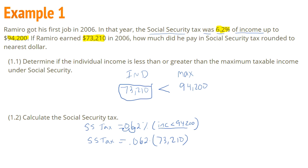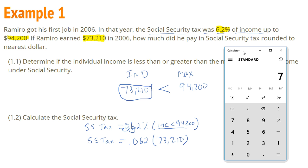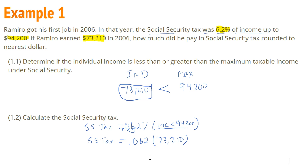Let's go ahead and calculate that. We take $73,210 times 0.062 and we get $4,539.02. That is our social security tax — that is how much was paid that year.